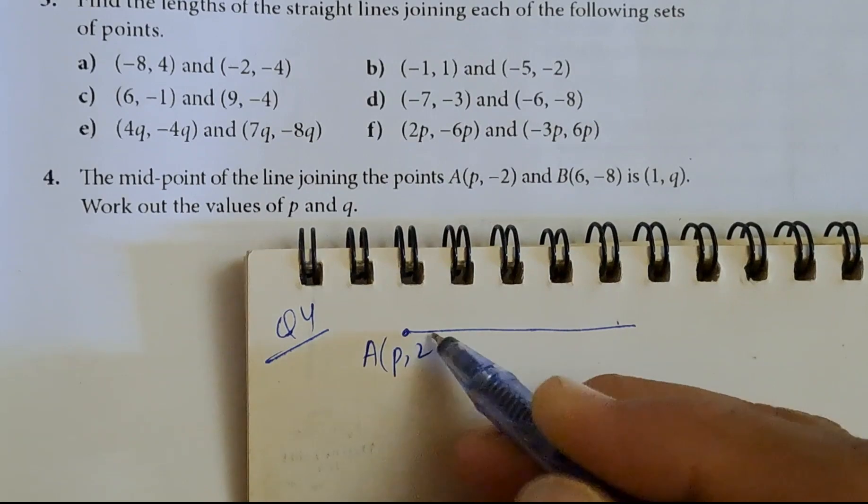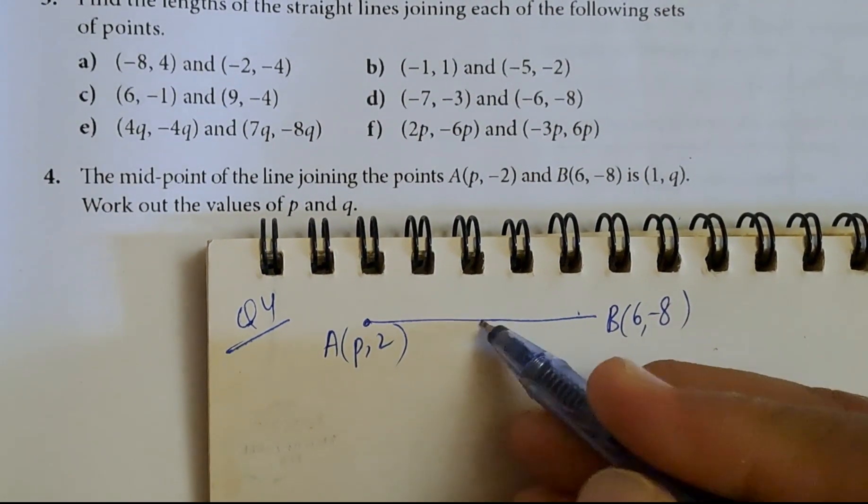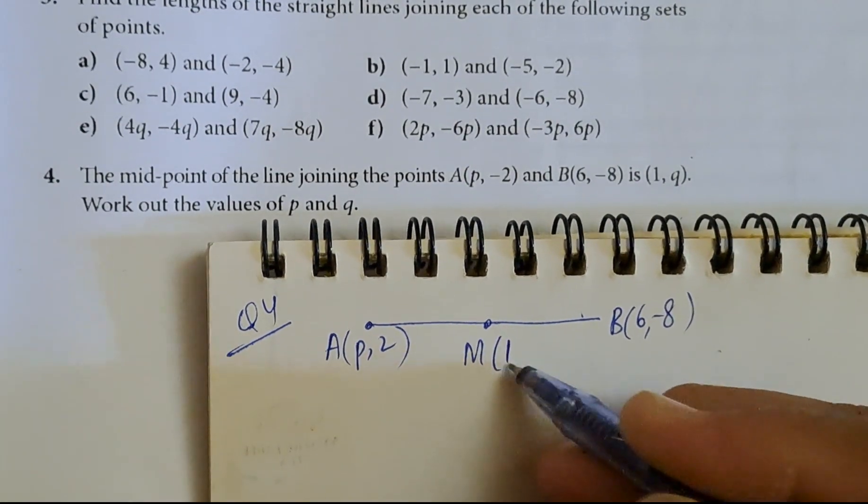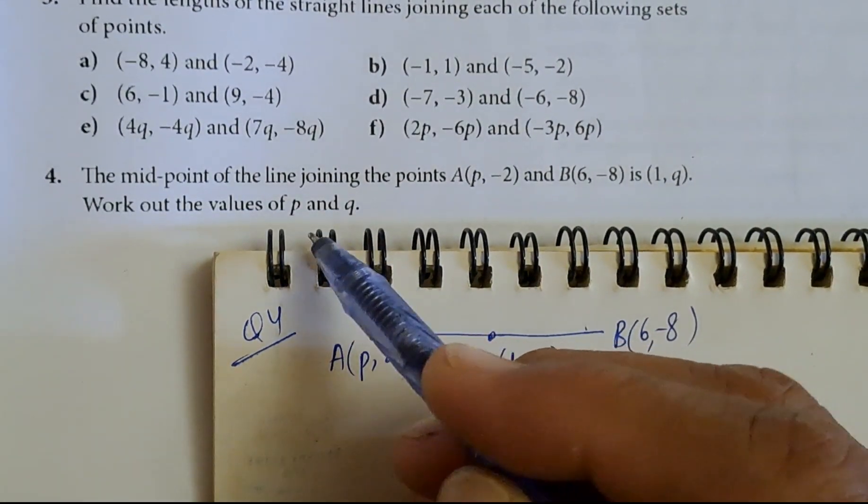Point A is (p, 2) and point B is (6, -8). The midpoint M is (1, q). We need to find the values of p and q.